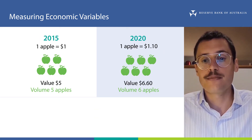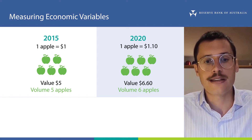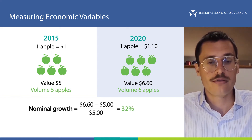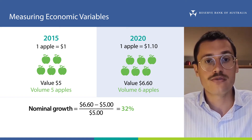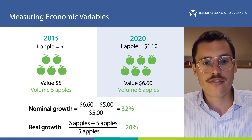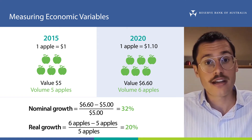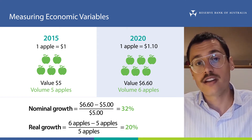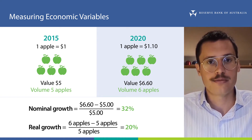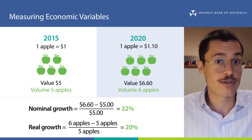Let's use these numbers to calculate the growth of the economy between 2015 and 2020. In growth terms, nominal growth — the percentage change in values — would be 32 percent, and real growth — the percentage change in volumes — would be 20 percent. These two numbers are quite different and nominal growth is higher than real growth. This is because prices have also increased between 2015 and 2020, and this increase is included in nominal growth.